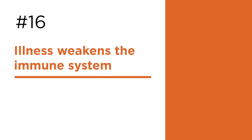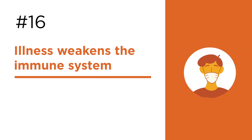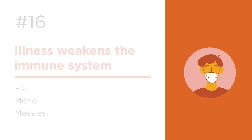Number sixteen: illness. Temporary conditions like the flu, mono, and measles can suppress your immune system while you're ailing. Your immune system recovers when you do.